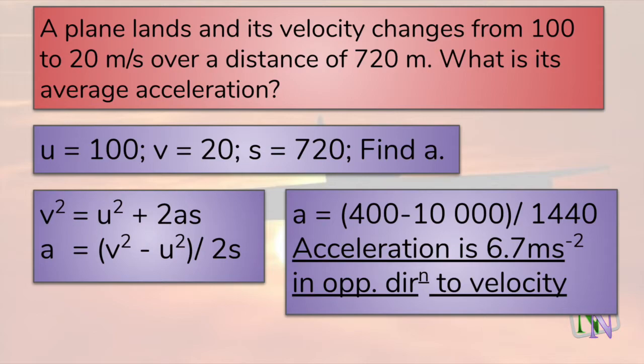So the information we have is V, U and S, which is three variables, so we know we can find any of the others. We need A. The formula using these variables is V squared equals U squared plus 2AS. We rearrange it to find A, and then we substitute in the numbers, and finally we arrive at 6.7 meters per second squared. The precision should be two significant figures, which is the same as the least precise figure, which is 20 meters per second. So we write that the acceleration is 6.7 meters per second squared in the opposite direction to the motion.